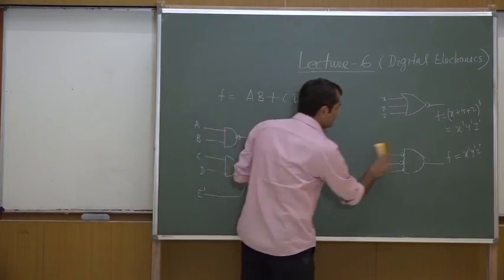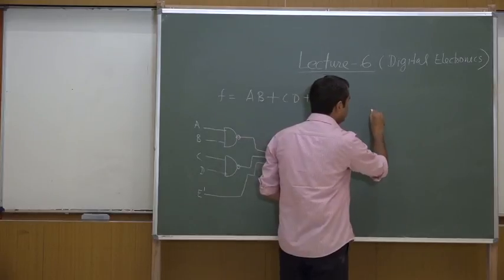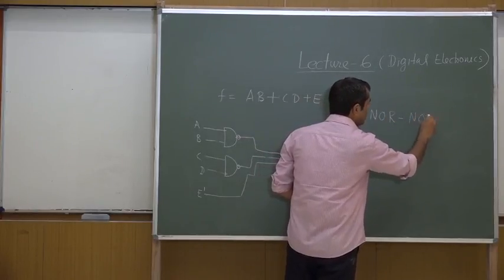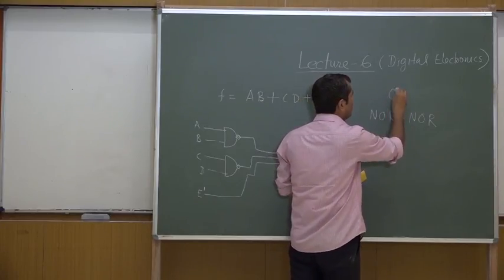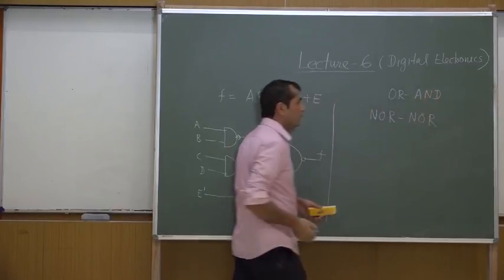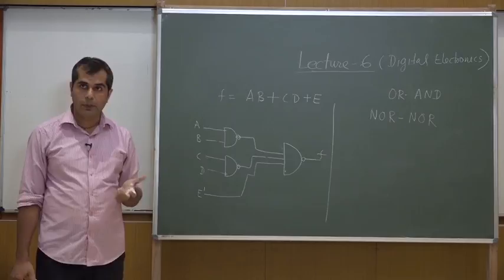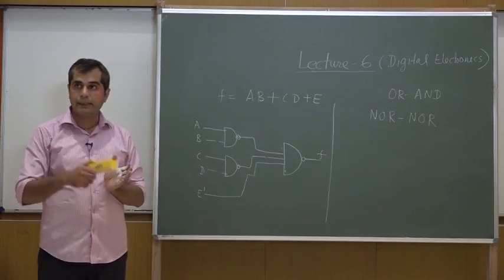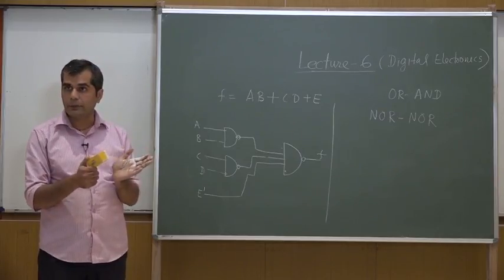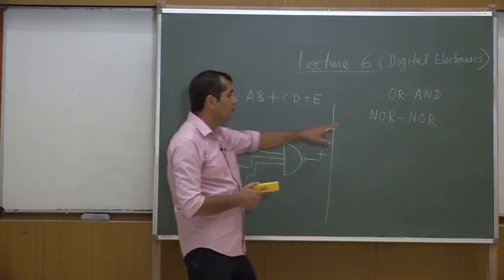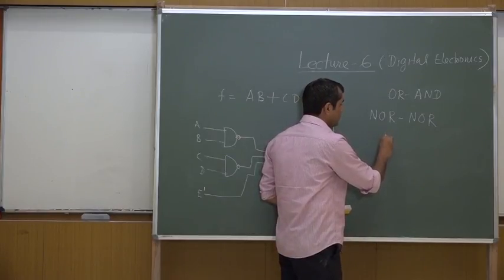Similarly, we can use a two-stage NOR-NOR in place of an OR-AND combination. OR-AND combination can be used to implement a Boolean function in product-of-sum form — first stage uses OR gates, next stage uses AND gate. We can replace both OR and AND gates with NOR gates: a two-stage NOR-NOR gate implements Boolean functions in product-of-sum form.